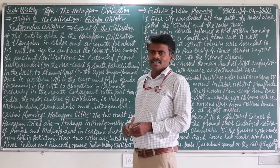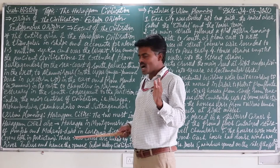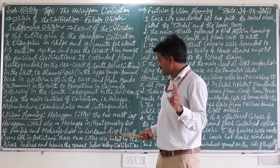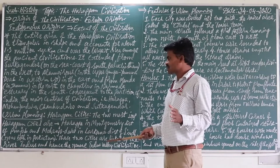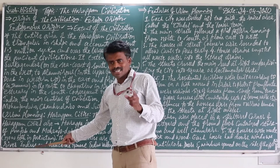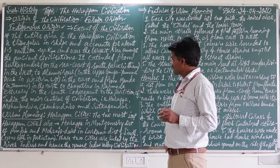Moreover, these two cities are linked by the river Indus. The two cities are also linked by the river Indus — that is the main reason why we call the civilization the Indus Valley Civilization or Harappan Civilization. That is why the civilization has two names.